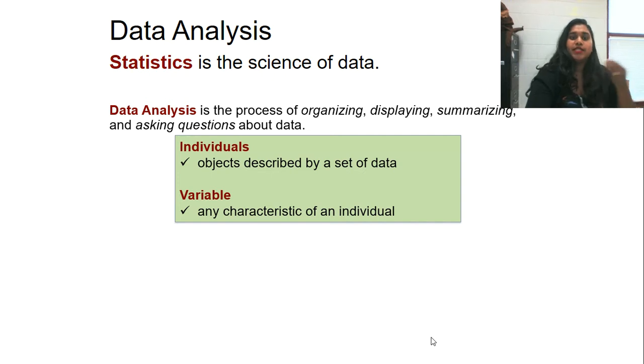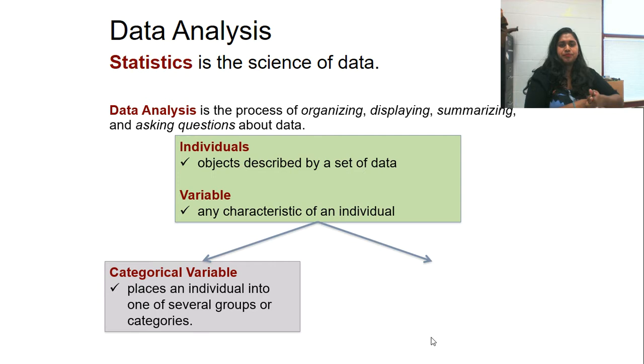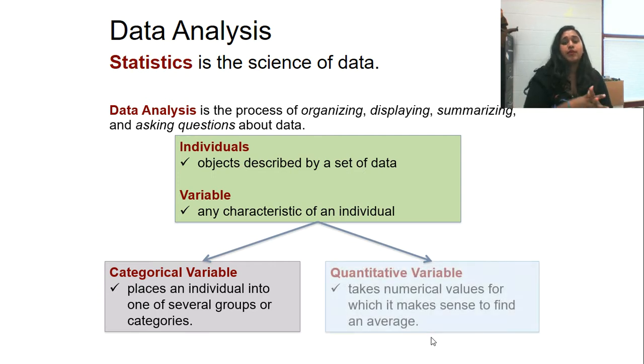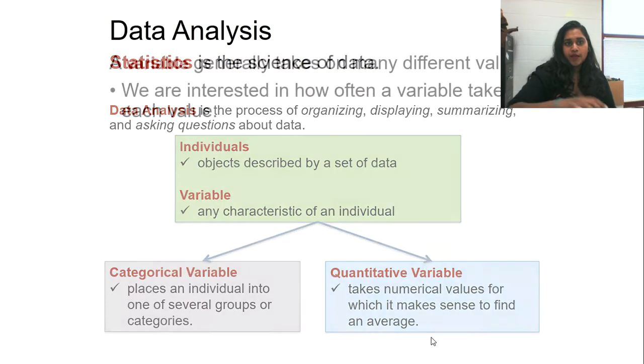So two vocab words to recall: what is an individual, what is a variable. An individual is the object described by the data set. And then the variable is any characteristic of an individual. In variables, we have categorical and we have quantitative. So category is obviously different types of categories that you can place an individual into, whereas quantitative is a numeric sense. Like categories could be do you have an advisory period, yes or no. Quantitative variable could be how many students are in advisory periods per teacher.